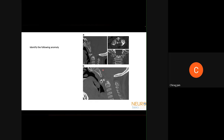Next question — identify this anomaly. Options: agenesis of the basal dens segment, bifid dens, os odontoideum, or dens bicornis.